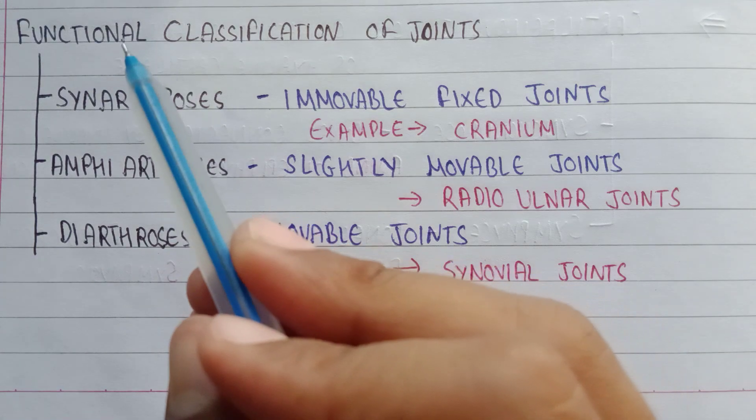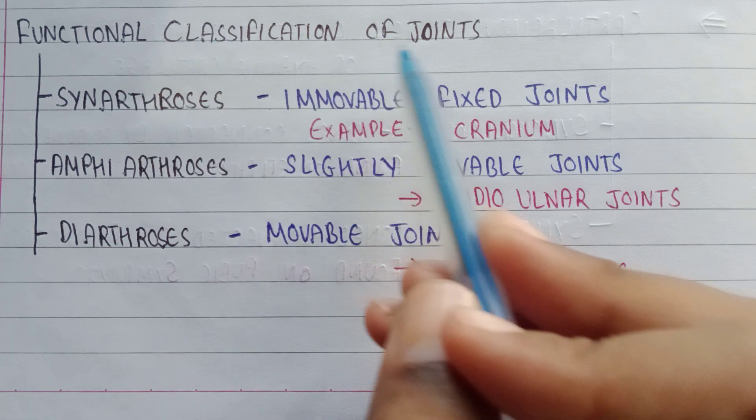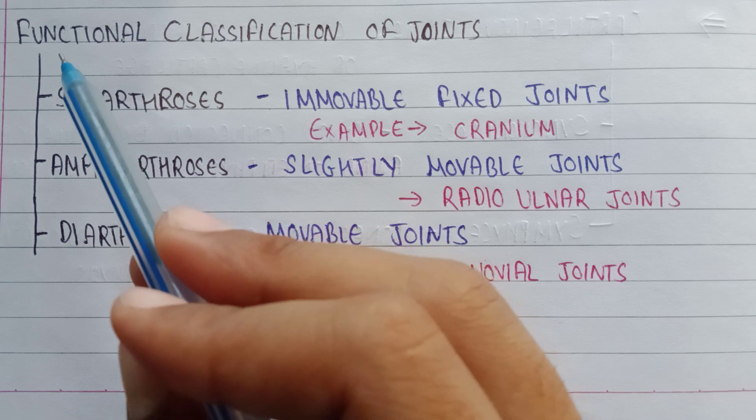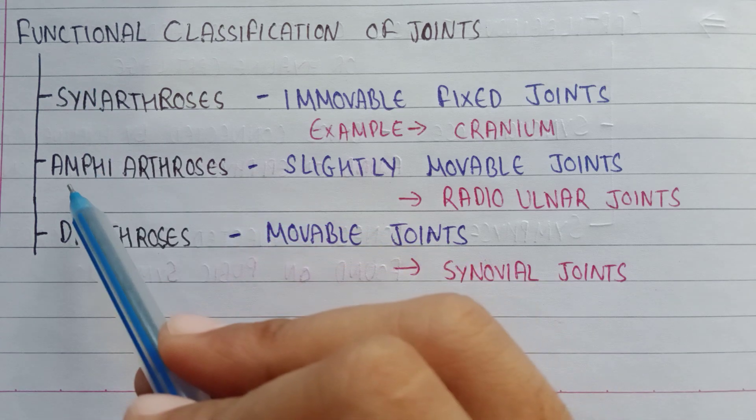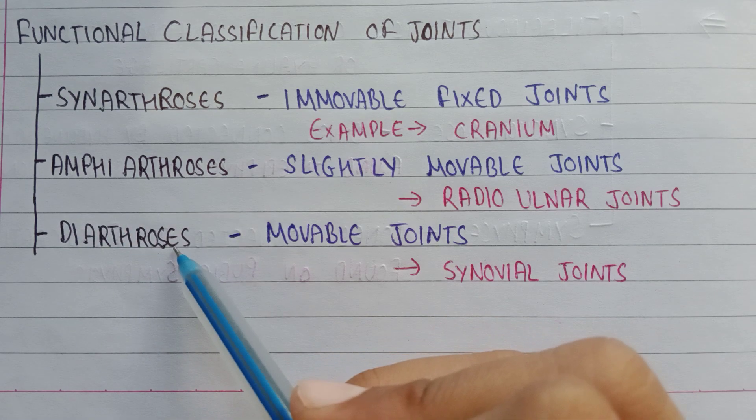Functional classification of joints. In this video, we will learn about the functional classification of joints. On the basis of function, we have divided the joints into three types: first is synarthrosis, second is amphiarthrosis, and third is diarthrosis.